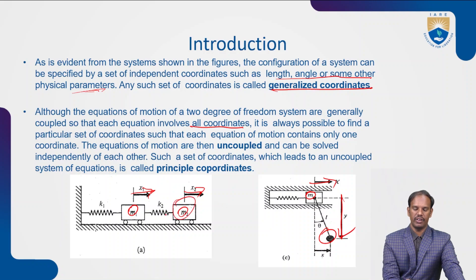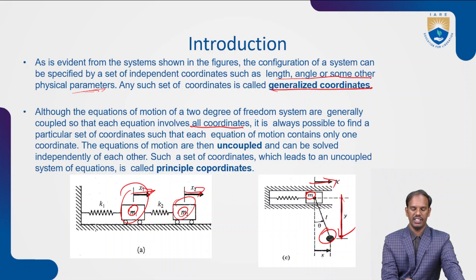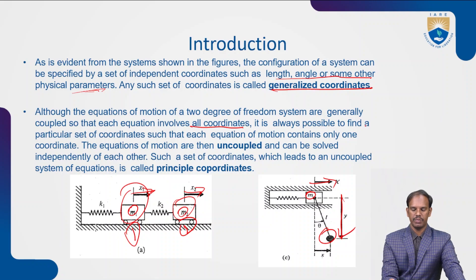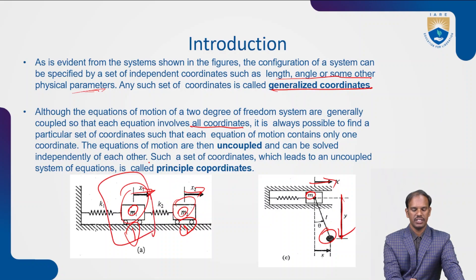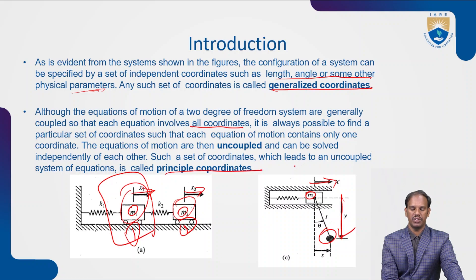Previously we dealt with only one coordinate. Now we need multiple coordinates — x and y — for each system. It is always possible to find particular coordinates such that each equation of motion contains only one coordinate and can be solved independently. Such a set of coordinates, which leads to an uncoupled system of equations of motion, is called principal coordinates.